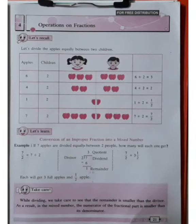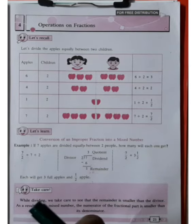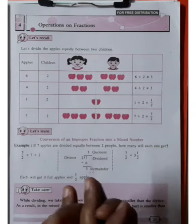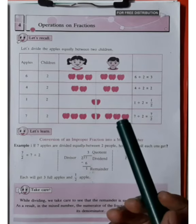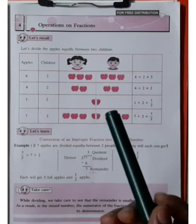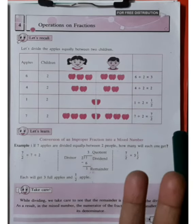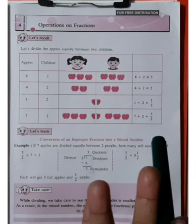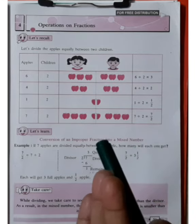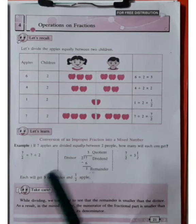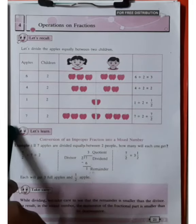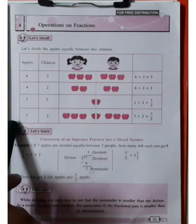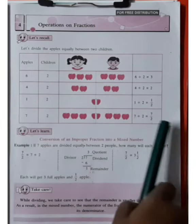You have learned in previous standard what is meant by fractions and what is an operation. You have known the operations on fractions — that is addition, subtraction, division, and multiplication. Those are the four most important operations on fractions. But let's recall. Look at this picture given in the textbook in this tabular form.